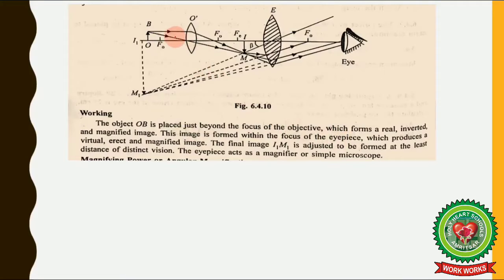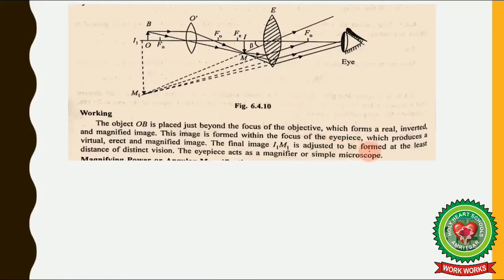This image formed by the objective is placed within the focus of the eyepiece. The image IM, which is between the eyepiece and its focal length, produces a virtual, erect, and magnified image — because when an object is placed between the focal length and a convex lens, the image is highly magnified, virtual, and erect. This IM acts as the object for the eyepiece. The final image I₁M₁ is adjusted to be formed at the least distance of distinct vision. The eyepiece acts as a simple microscope.